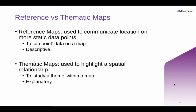GIS is known to produce two broad types of maps: reference and thematic maps. Reference maps are used to communicate location on more static data points — to pinpoint data on the map — and we can think of this as more descriptive. They tend to highlight natural or synthetic features including the positioning and heights of mountains or the layouts of bus routes. On the other hand, thematic maps are used to highlight some sort of spatial relationship — to study a theme within a map — and these can be viewed as more explanatory.